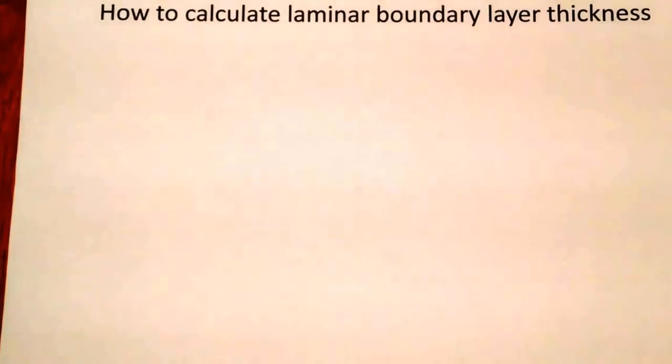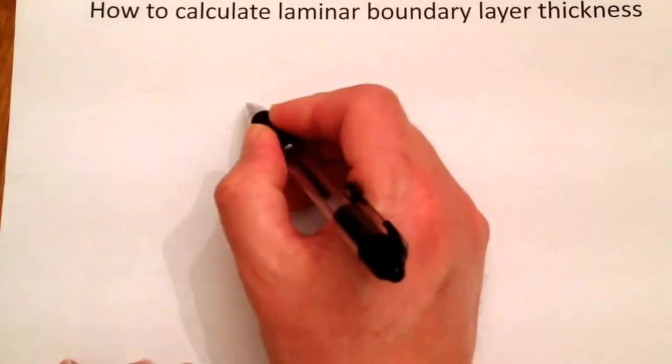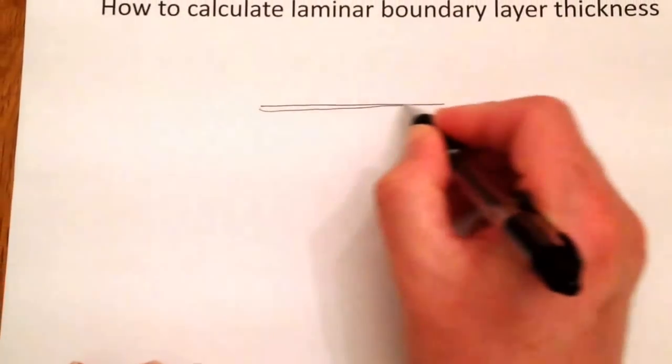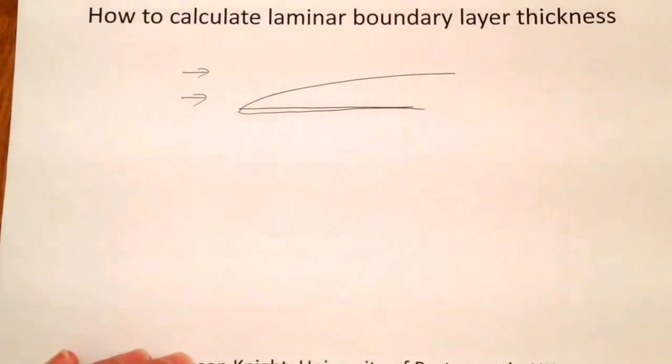In this clip we are going to look at how to calculate the laminar boundary layer thickness. We are going to use an example of a flat plate. We have a flow coming over and the boundary layer will grow along the plate.